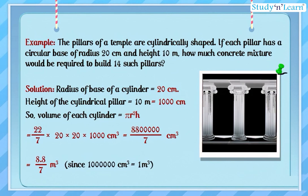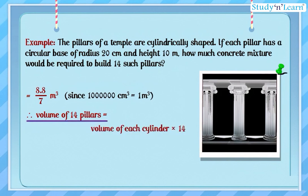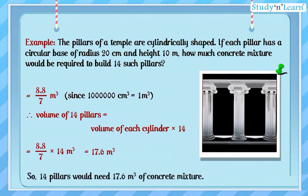Therefore, volume of 14 pillars is equal to volume of each cylinder into 14, which is equal to 8.8 upon 7 into 14 cubic meters, equal to 17.6 cubic meters. So 14 pillars would need 17.6 cubic meters of concrete mixture.